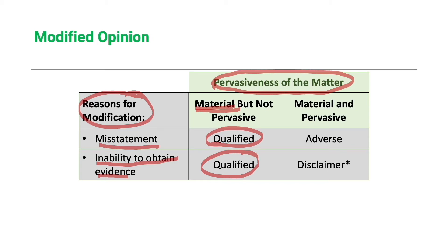The auditor will issue an adverse opinion if the reason is a misstatement and the effect of that misstatement is both material and pervasive.